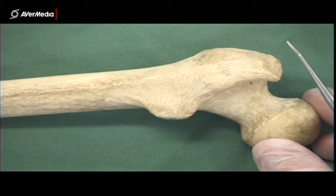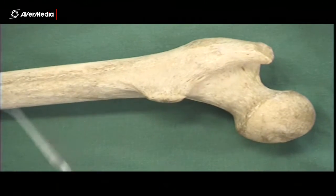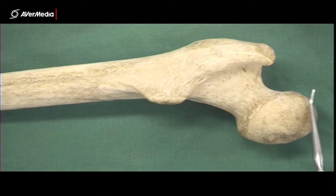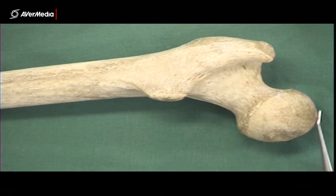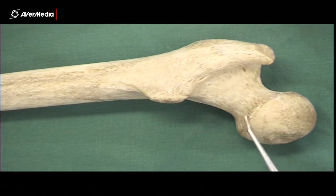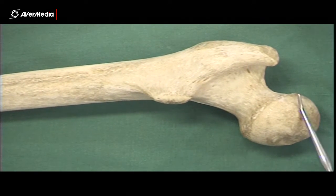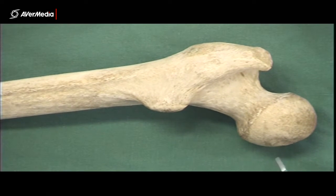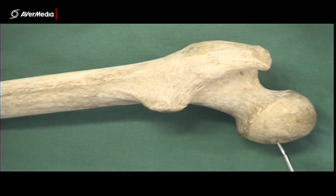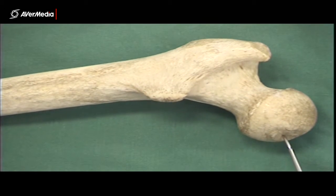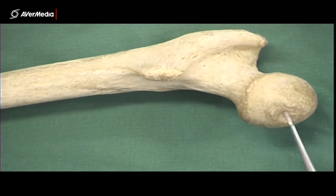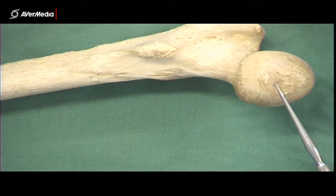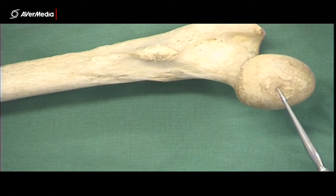Here we are looking at the femur, at the proximal end, from a posterior point of view. What we can see first of all is the head. This here is the head of the femur — you can see it's a well-rounded ball. Notice that in the surface of the head there's a little fovea. That's the fovea for the ligament of the head of the femur, sometimes called the fovea capitis.